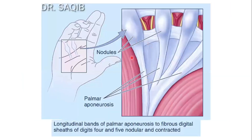And you could see here, these are the longitudinal bands of the palmar aponeurosis going to the fibrous digital sheets of digits four and five — the medial two digits — and they are contracted. You could see they are contracted, and these are the nodules. Here you could see these are the nodules.